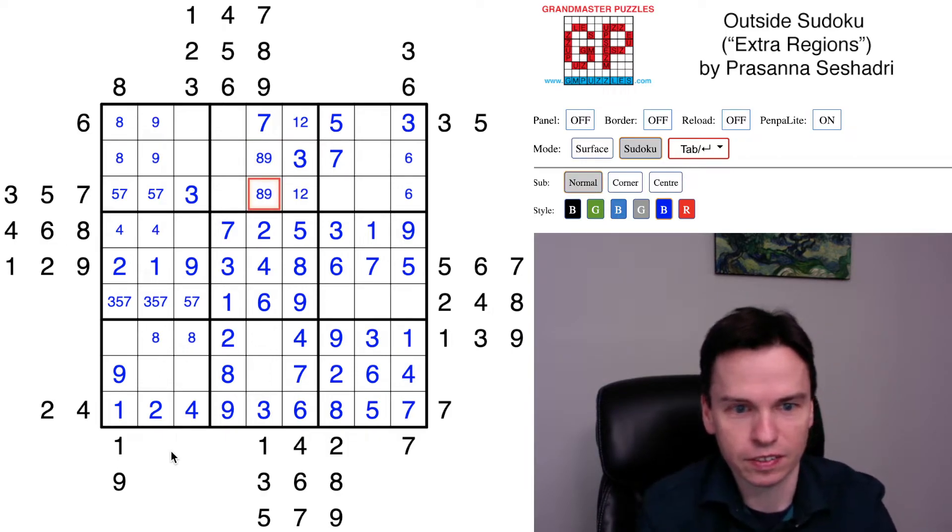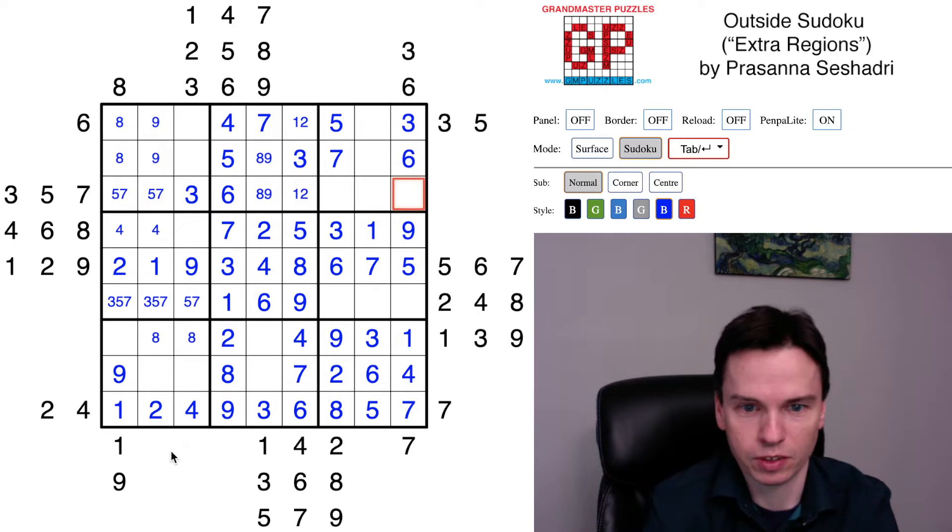Gives me this 6, this 7. Gives me a 7 in one of these two cells but there's a 7 to the left, that means there's a 7 here with an 8, 9. 8, 9, 5 and 5 give me a 5 in the middle of these three rows.